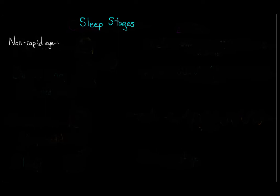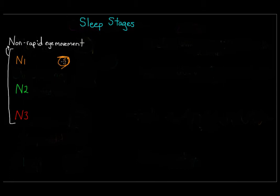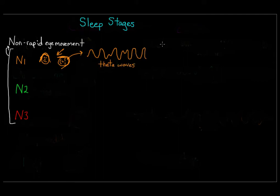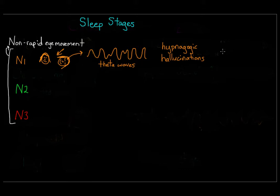The first three stages are all considered non-rapid eye movement, or non-REM, which I'll abbreviate as N1, N2, and N3. N1 is the stage between sleep and wakefulness — this is when your brain starts producing theta waves. You might experience strange sensations known as hypnagogic hallucinations, which can include hearing or seeing things that aren't there, such as seeing a flash of light, or hearing someone call your name, a phone ring, or a doorbell.